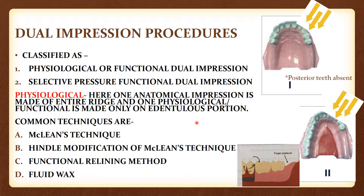Dual impressions are broadly classified as physiological and selective pressure functional dual impressions. Various techniques exist, though the basic principle remains the same. The anatomical impression records the teeth, and the functional impression records the denture-bearing ridge. The two impressions are used together to fabricate the denture, and this dual impression is done in distal extension cases.